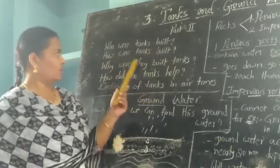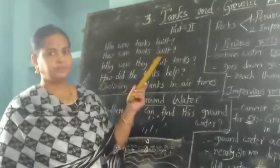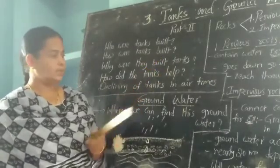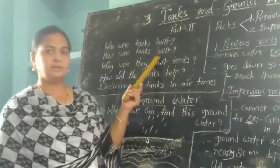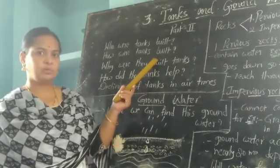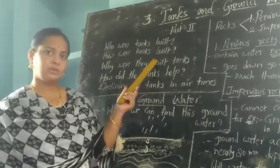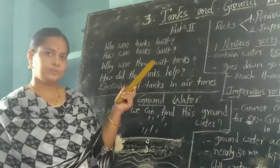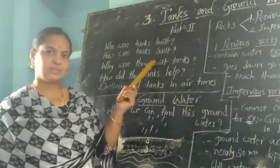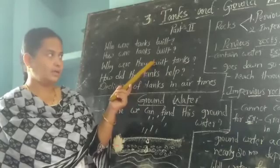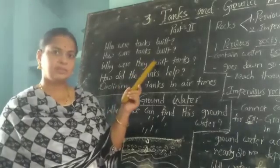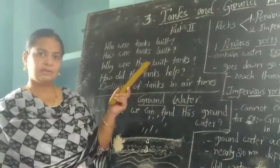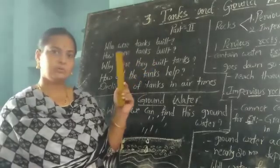How were tanks built? During the rainy season, rain water flows in small streams and channels, and these all join together in a large hub which is known as a tank. The kings then built a strong wall on all four sides of the tank to store rain water.